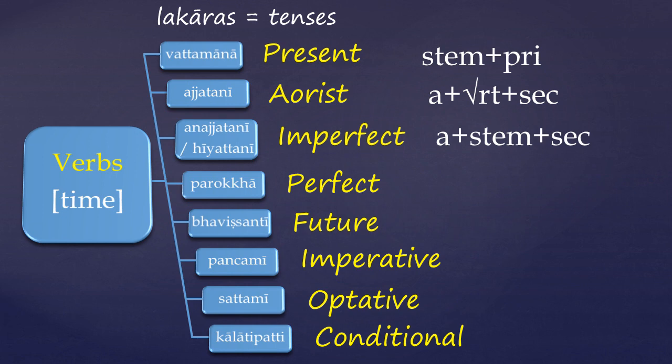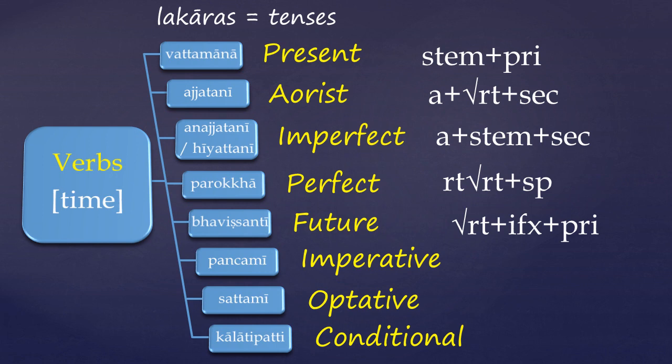The imperfect is similar to the aorist but is based on the present stem rather than the root, and also takes the augment and the secondary endings — it's sometimes referred to as the aorist of the present stem. And remember, we're talking about Sanskrit here. The perfect is marked by reduplication of the root, with a special set of personal endings. The future is marked with an infix applied to the root and the primary set of personal endings. The remaining three are what we'd call moods in English, with moods being classed as tenses in Pali. It's crucial to understand that these so-called tenses are named because they're consistent with the inflection schemes of other Indo-European languages, specifically Greek, and not because of their meaning.